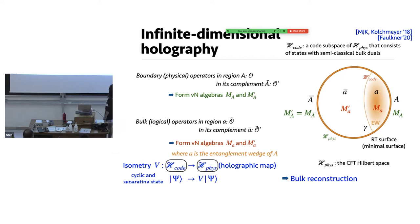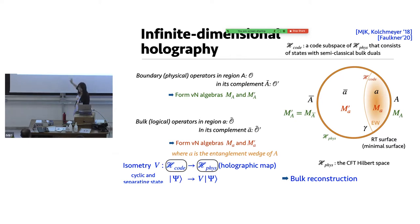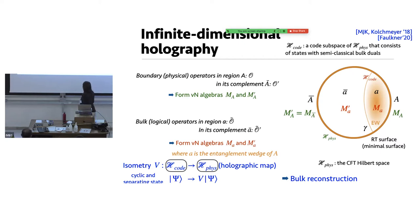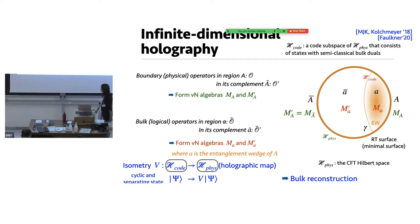Through this isometric map — defined with the H physics of the boundary and H code as a code subspace — the isometry maps between the two. If that looks like unnecessary jargon, it's really just the projection from the beginning picture. One crucial thing I'm really using here is that a cyclic and separating state will map to a cyclic and separating state between the two different Hilbert spaces through this isometry. You can try to relax that, but in essence it goes back to this type of system as a requirement.